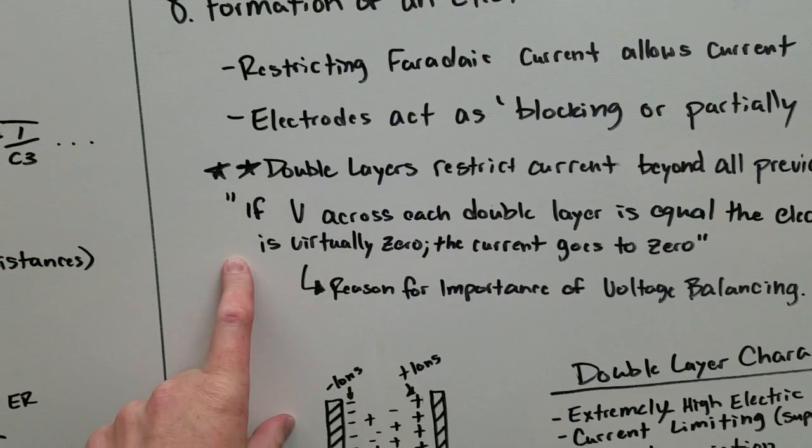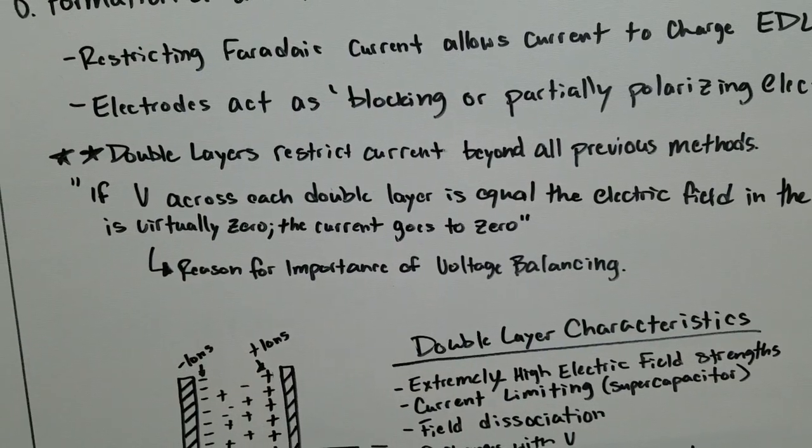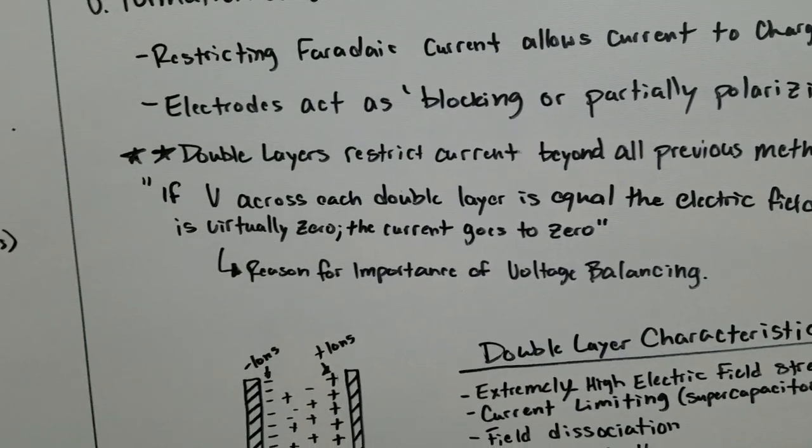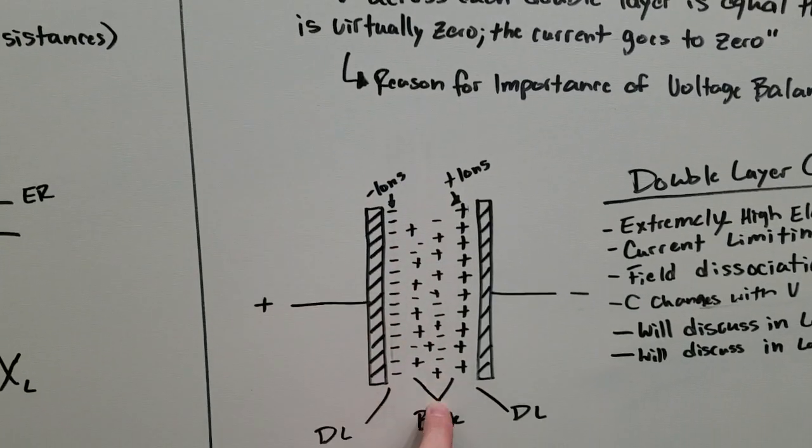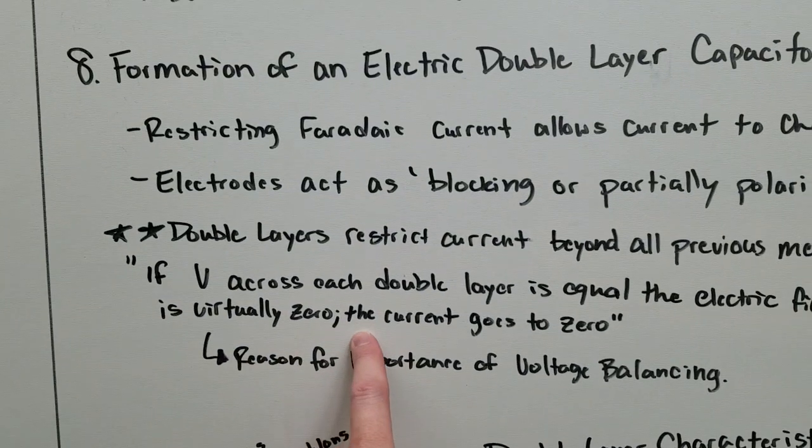So the double layers restrict current beyond all previous methods. In one of my papers here, it states, if the voltage across each double layer is equal, the electric field in the bulk is virtually zero. This is the bulk here. So the electric field in the center portion of the water is zero.